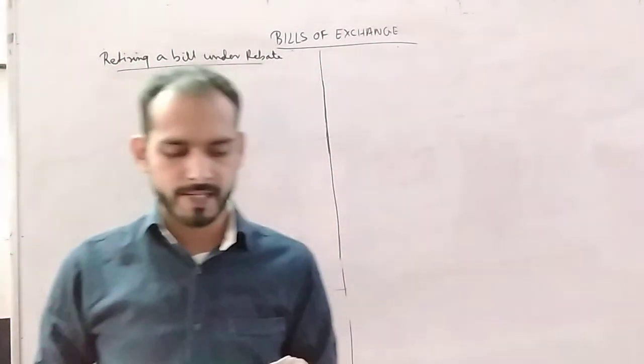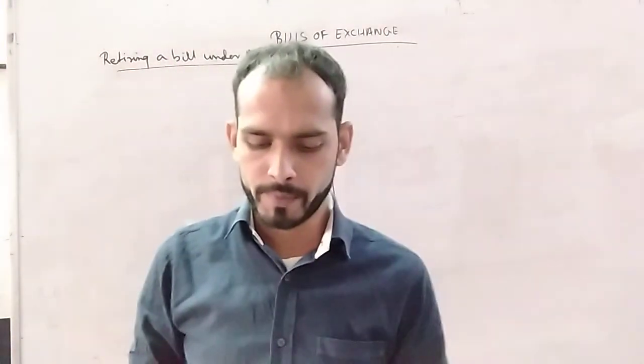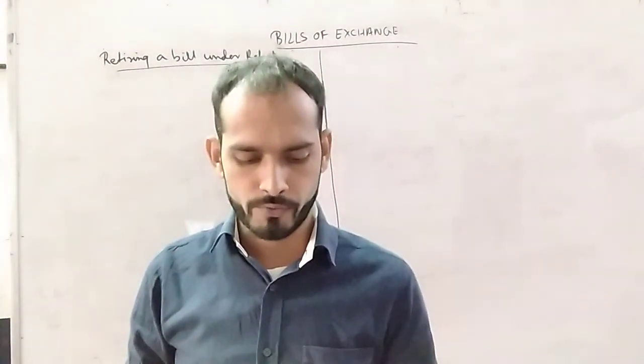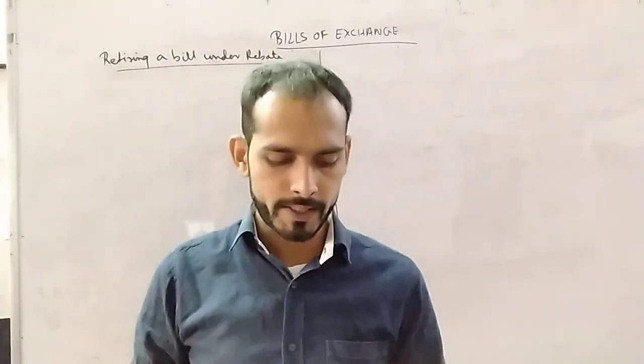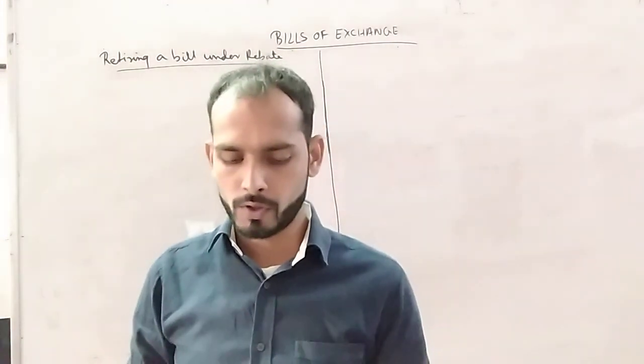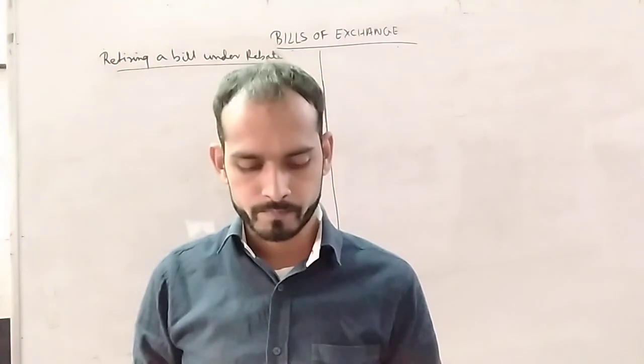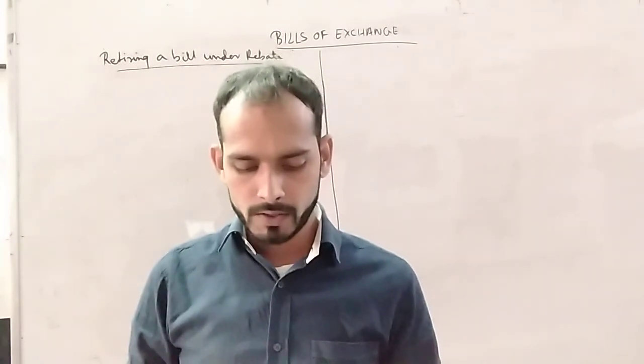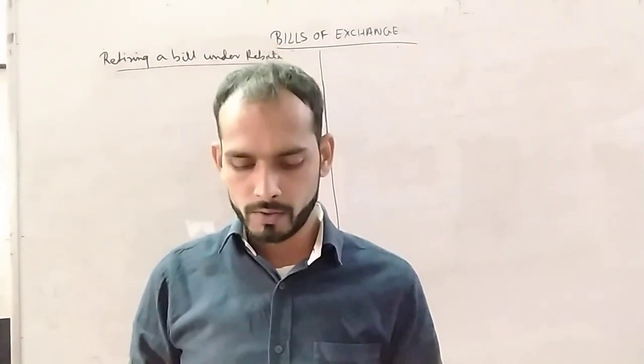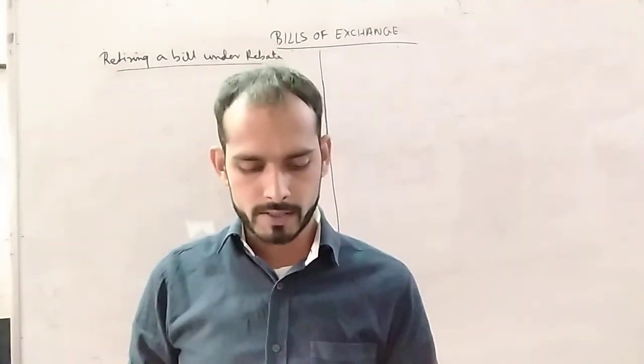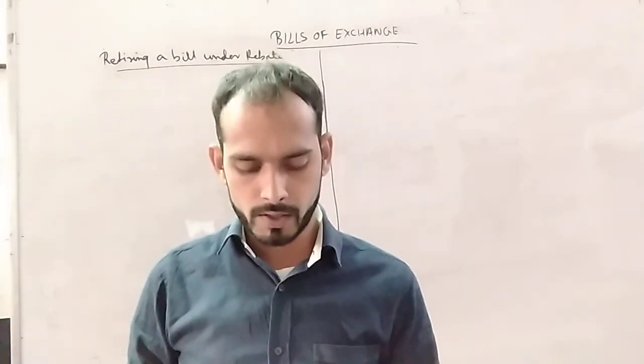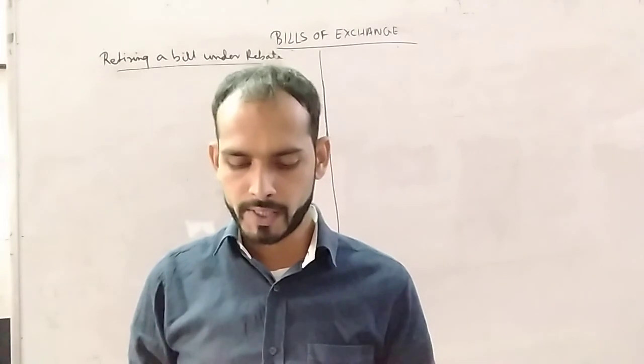On 1st January 2018, Ajay sold goods to Balbir for $10,000 at a discount of 20%. On that date, Balbir accepted a bill drawn on him by Ajay for Rs.8,000, payable three months after. Having surplus funds, Balbir paid off the bill on 4th March and was allowed a rebate of 18%.